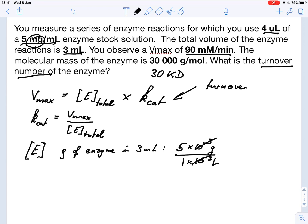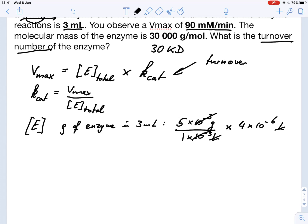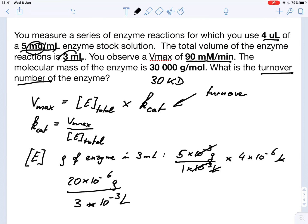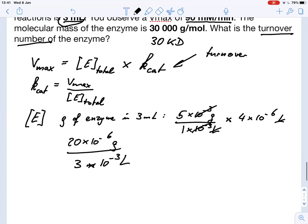Conveniently, the 10 to the minus 3 cancels out. And we use 4 microliters of that, so we have 4 times 10 to the minus 6 liters. We can see the liters cancel out, and therefore we have 5 times 4 times 10 to the minus 6. That gives us 20 times 10 to the minus 6 grams in 3 times 10 to the minus 3 liters. So that was our total volume of the reaction.